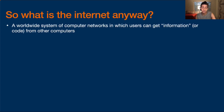So what is the internet? The internet is simply a worldwide system of computer networks in which users can get information or code from other computers. When we talk about the internet, it's actually just all of our computers talking to each other — computers, servers, these are all kinds of computers. We're essentially just a network of computers communicating with each other. And that is what the internet is in very simple terms.